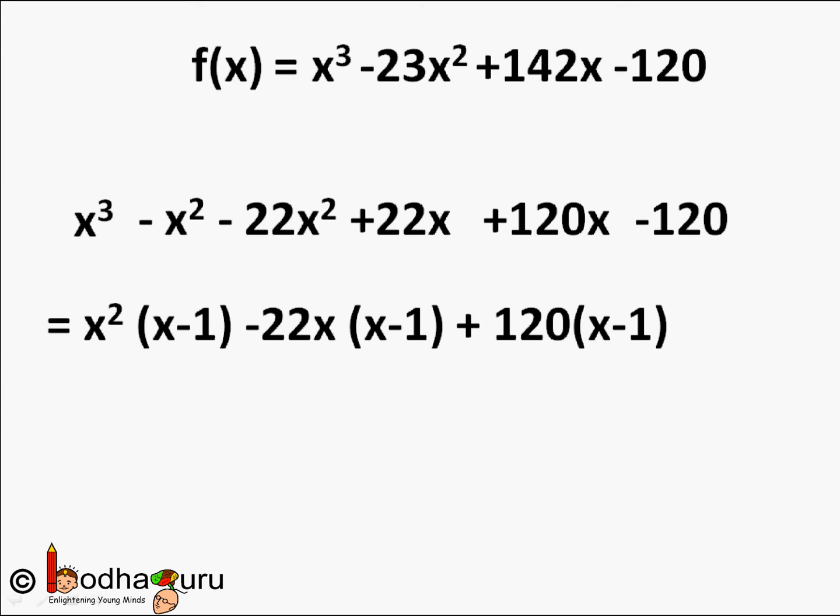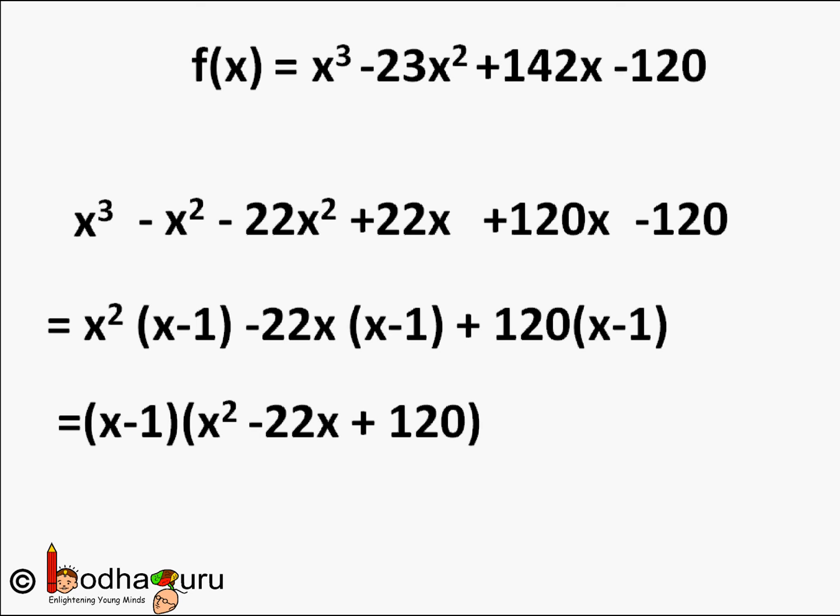Similarly, we write 142x as 22x + 120x. Because we see 22x² on the left side, we pair -22x² with 22x. The remaining terms are 120x - 120. This simplifies to x²(x - 1) - 22x(x - 1) + 120(x - 1). Taking (x - 1) as common from every term gives (x - 1)(x² - 22x + 120).